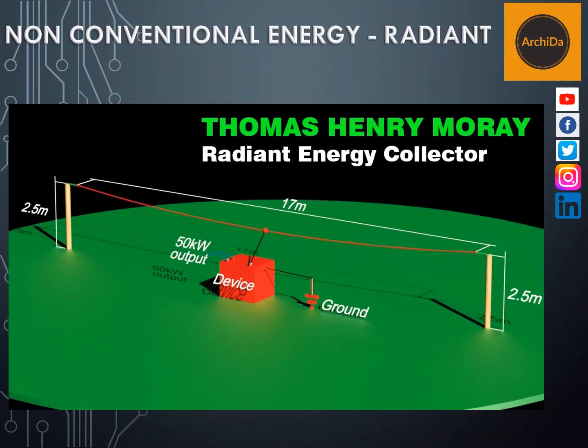Another inventor of radiant energy is Thomas Henry Morey. His version involved placing a 17-meter-long wire at 2.5 meters high over two poles and collecting the radiant energy on that wiring alone.